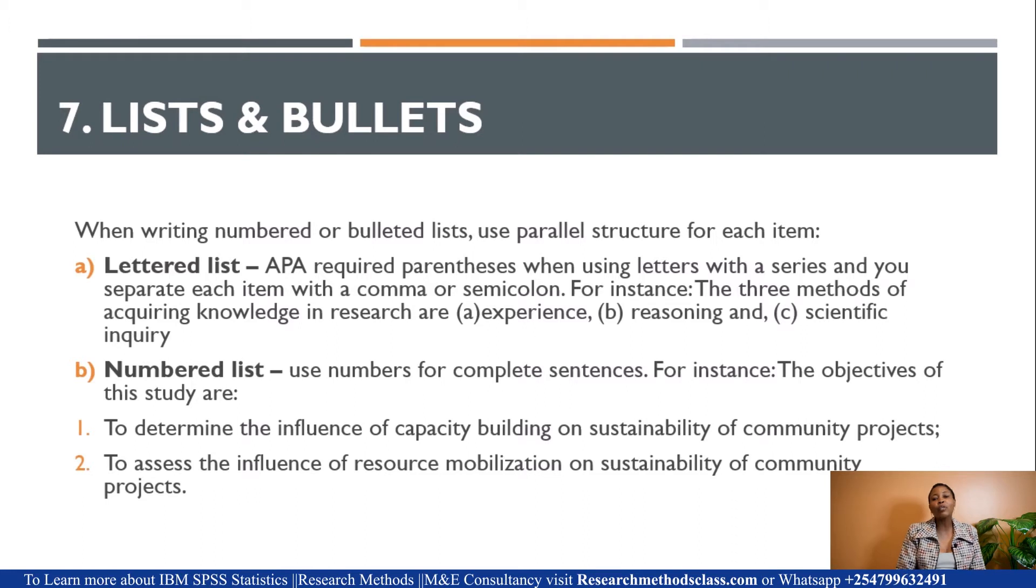We continue with lists and bullets. When writing numbered or bulleted lists, use parallel structure for each item. For lettered lists, using Roman numbering, APA requires parentheses when using letters with a series, and you separate each item with a comma or semicolon. For instance, in the same sentence, if I wanted to explain the three methods of acquiring knowledge in research using Roman numerals, it will be in the same line. The three methods are (a) experience, (b) reasoning, and (c) scientific inquiry. If that is the end of the sentence, put a full stop.